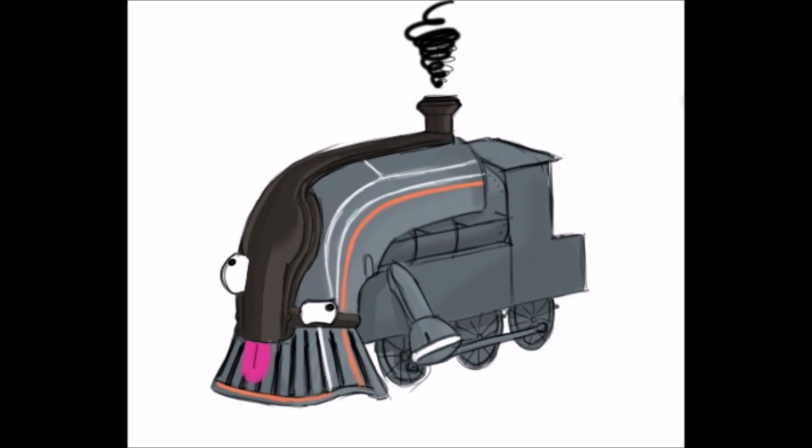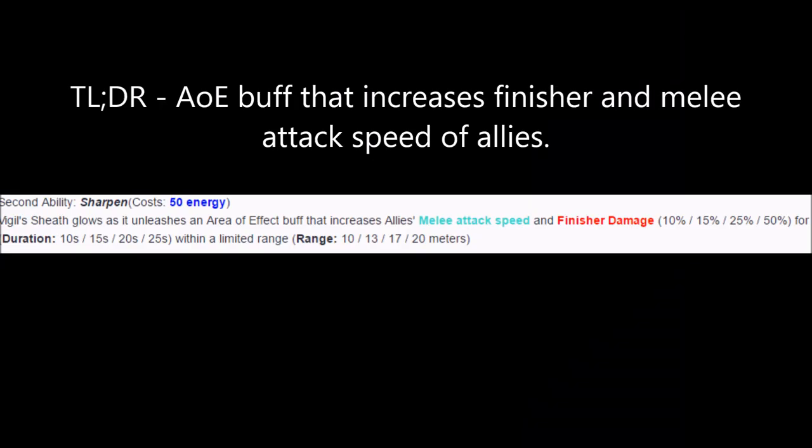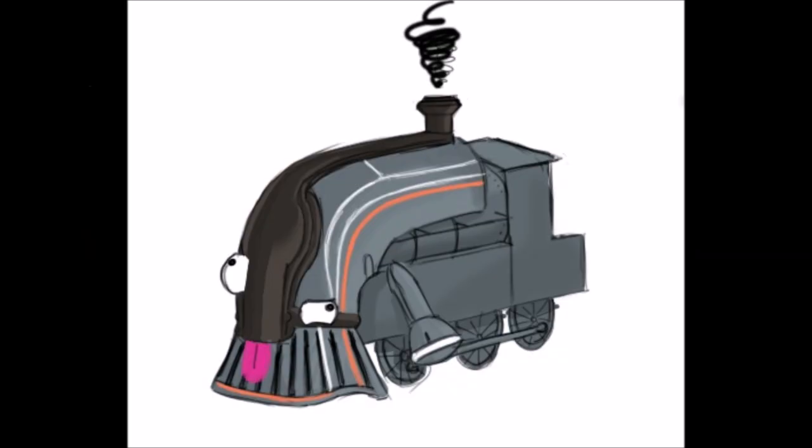Vigil's second ability is Sharpen. Sharpen increases the melee attack speed and finisher damage of nearby allies for a limited amount of time. Sharpen is pretty self-explanatory, as it's a simple AoE team buff. However, since Sharpen increases finisher damage, Vigil might have very strong synergy with Excalibur and Mirage, with Radiant Finish and Total Eclipse equipped respectively.